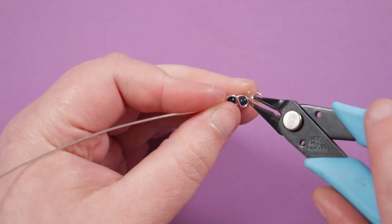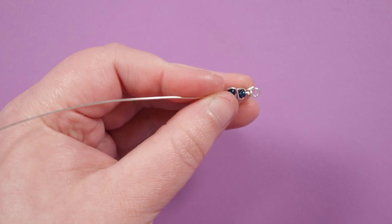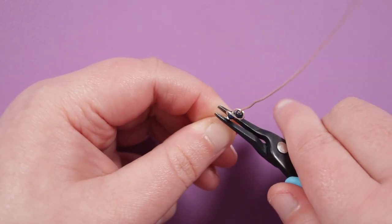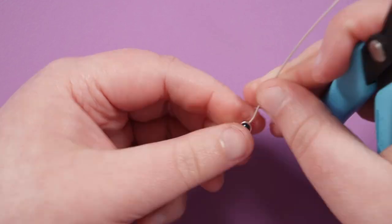And then we just want to cut off the excess get rid of that end and then always make sure to squeeze the end down nice and tight so we can't feel it with our fingers so that is now a wrap loop on one end.